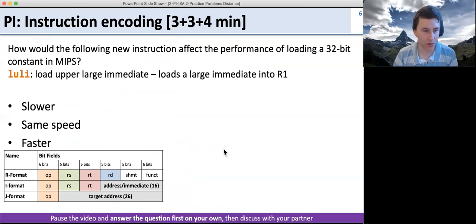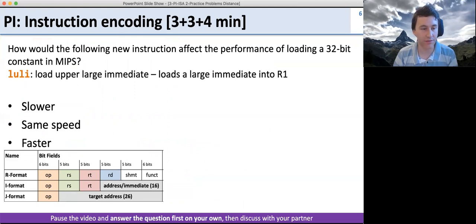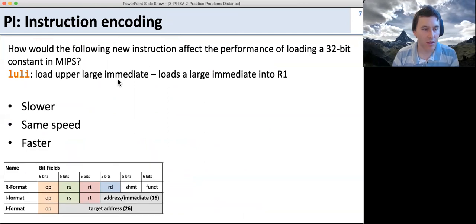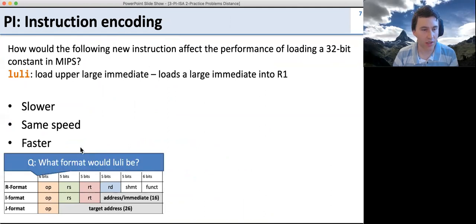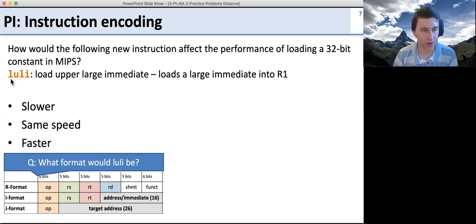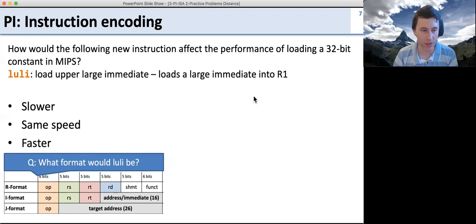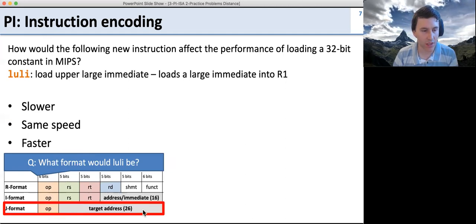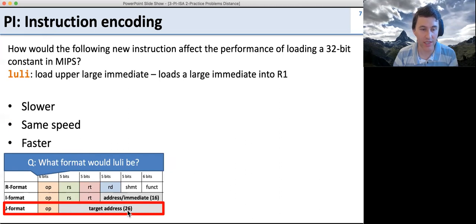Here's an instruction question. How would the following new instruction affect the performance of loading a 32-bit constant? To load a 32-bit constant before, we used one instruction to load part of the immediate and another for the rest. The new instruction is LULI — load upper large immediate — which loads the largest immediate we can into register one. We want to use the J format because we don't need to specify a register, and the J format doesn't specify one. Using the J format gives us 26 bits of immediate, better than the regular I format's 16 bits.